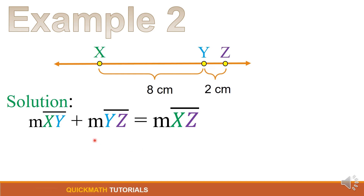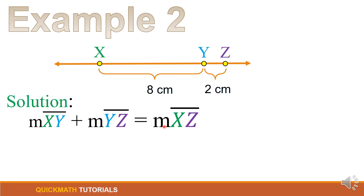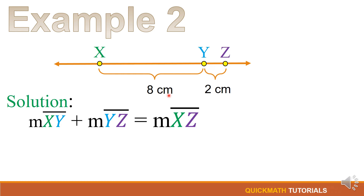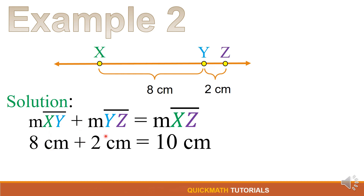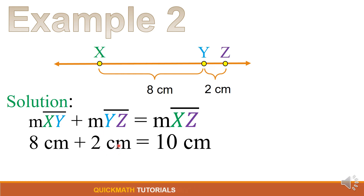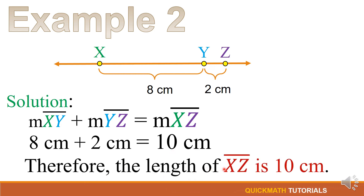For our solution, we will use the formula for the segment addition postulate: the measure of line segment XY plus line segment YZ is equal to the measure of line segment XZ. Now we will substitute the given measurements. Line segment XY is 8 cm, plus line segment YZ is 2 cm. So 8 plus 2 is equal to 10 cm. The length of line segment XZ is 10 cm.